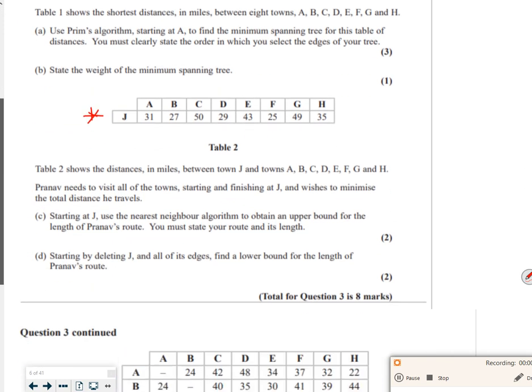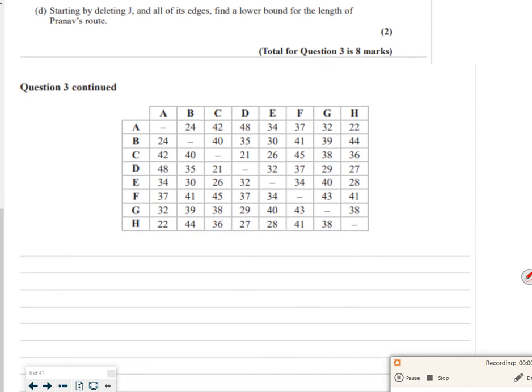So let's do Prim's down here. So remember with Prim's, we delete the row, number the column, and circle the smallest from any given numbered column. Right, so I'll start it off, but then I'll kind of pause it so I'm not wasting time.